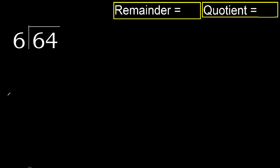64 divided by 6. 6 is not less, therefore start with 6. Here, 6 multiplied by which number is nearest to 6 but not greater? 6 multiplied by 2 is 12, which is greater. Multiplied by 1 is 6, which is not greater.